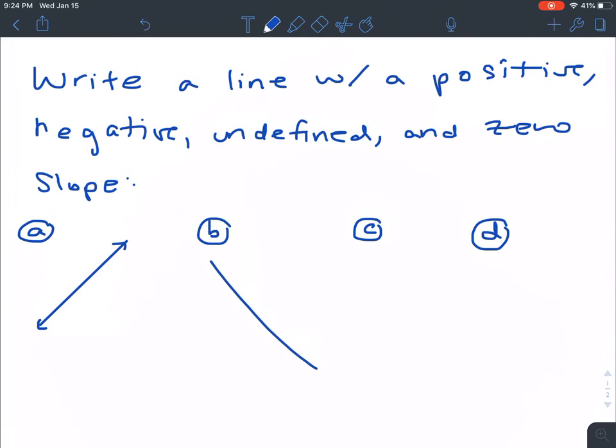A negative slope is going to go down to the right. So it'll look like this with arrows.